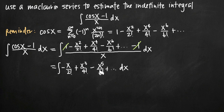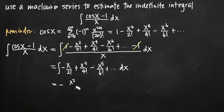Our integral has become significantly simpler. Now it's pretty easy to evaluate. The factorial terms in the denominators are like constant coefficients on the power functions x, x cubed, x to the fifth — they just remain. All we need to do is add 1 to the exponent of each x term. So x to the first becomes x squared, but we divide by the new exponent 2, and the 2 factorial stays. Everything stays the same except we increase the degree of each x term by 1 and divide by that new exponent.